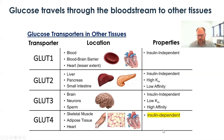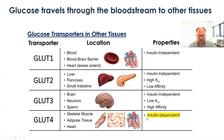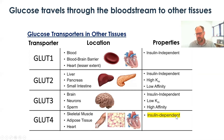The final glucose transporter we'll discuss is GLUT4, which is very relevant to today's discussion because it is insulin-dependent — it actually requires the presence of insulin to function. GLUT4 is found in skeletal muscle, adipose tissue, and the heart. We'll talk more about how this insulin dependence works in a few additional slides.